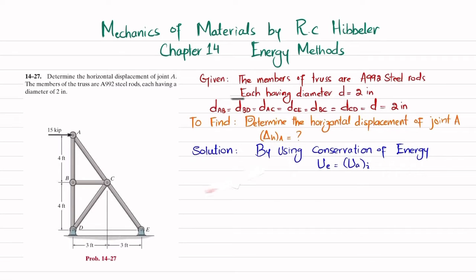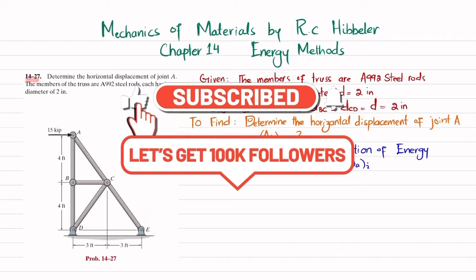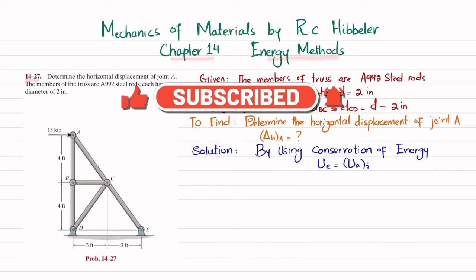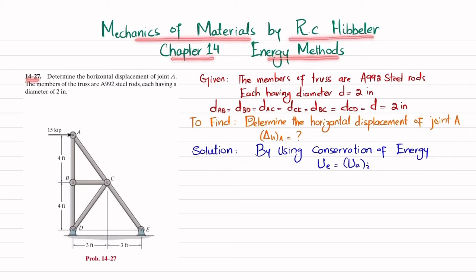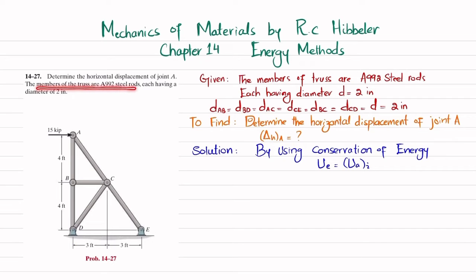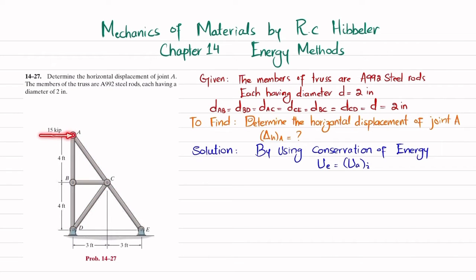Welcome back. Problem 14-27 is taken from Chapter 14, Energy Methods, from the book Mechanics of Materials by R.C. Hibbeler. The statement is: determine the horizontal displacement of joint A. The members of the truss are A992 steel rods each having a diameter of 2 inches. There is a load of 15 kips applied at joint A, and you have to find the horizontal displacement delta H A.